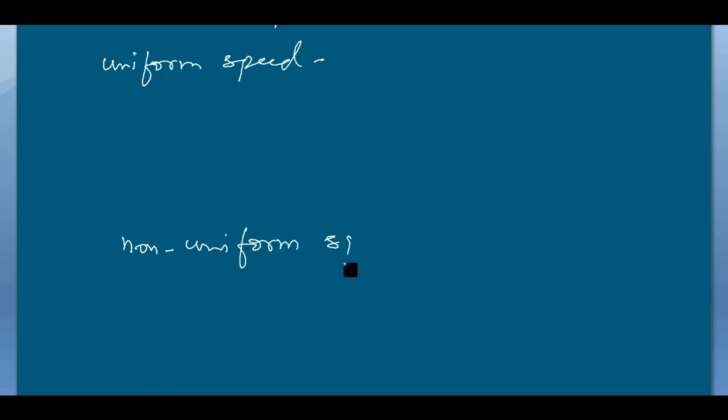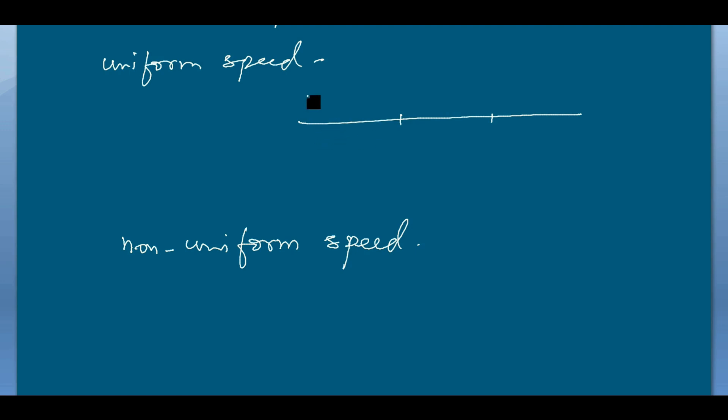As we know, there are two types of motion: uniform motion and non-uniform motion. Similarly, we have two types of speed — uniform speed and non-uniform speed. If an object covers equal distances in equal time intervals, then we say the object is in uniform motion or has uniform speed.